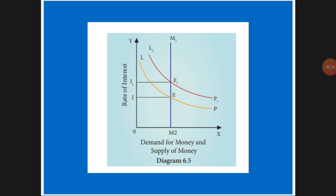If liquidity preference increases from LP to LP1, that means LP is the orange color curve and L1P1 is the red color curve. The supply of money is constant at M. On the Y-axis you can see OI and OI2. According to the interest rate, the supply of liquidity — whatever money is in your hand — can increase or decrease.